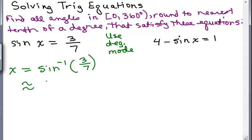Rounded to the nearest tenth of a degree, I have 25.4 degrees. So notice that is in between 0 and 360, so that is going to be one of our solutions.